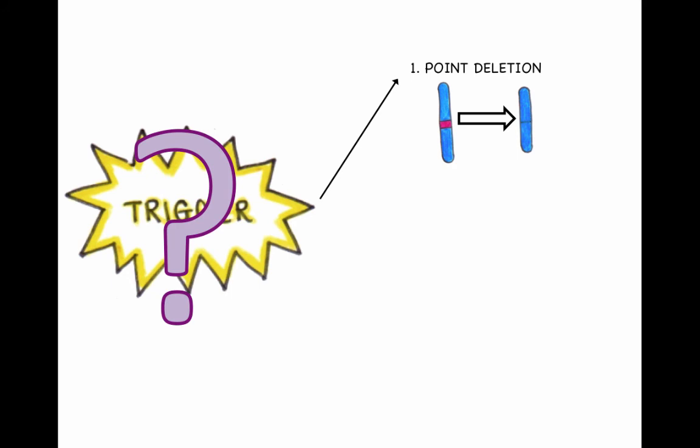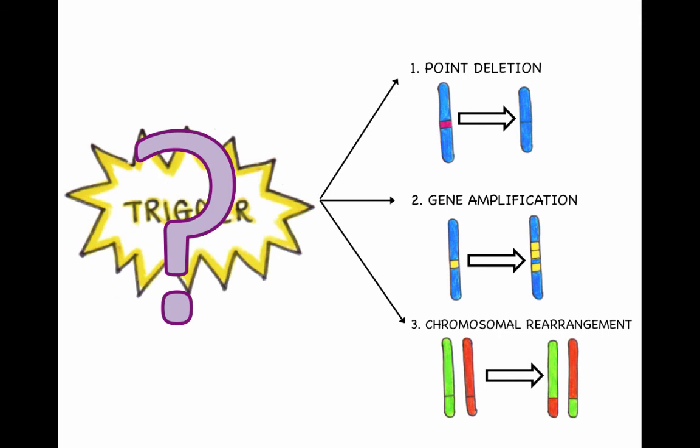Point mutation and deletion. Gene amplification. And chromosomal rearrangement. All these chromosomal changes can lead to unregulated cell proliferation.